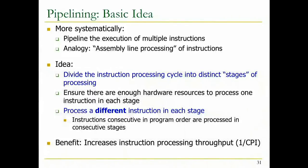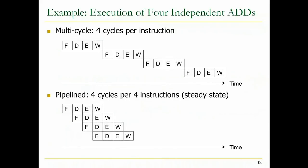That's the benefit hopefully, but there are a lot of gotchas. The downside: we're going to add more hardware cost, more overhead, and each instruction will take longer. Let's look at the beautiful case first. Multi-cycle looks like this: assuming four cycles per instruction with independent add instructions, the first instruction finishes in four cycles, the next in four cycles. You take about 12 cycles to finish four instructions. You'll see how stupid this is with the next analogy.